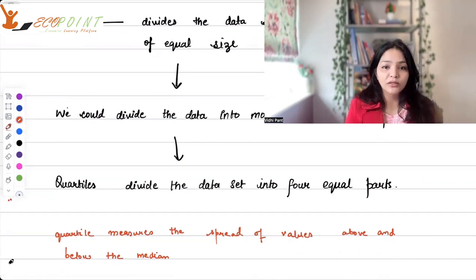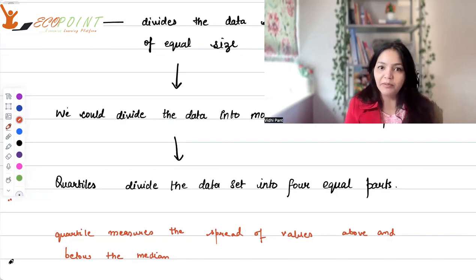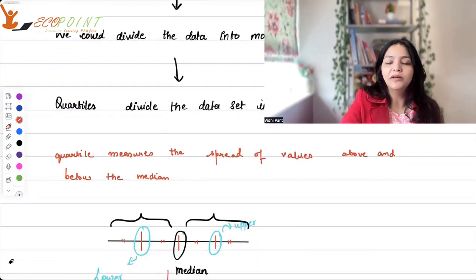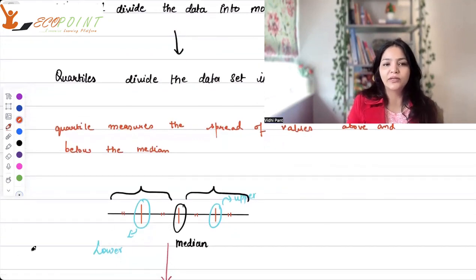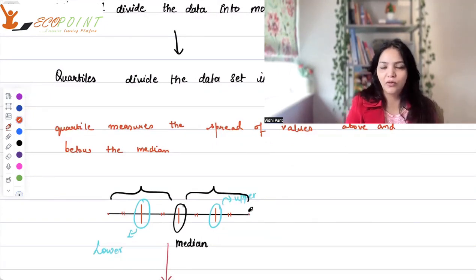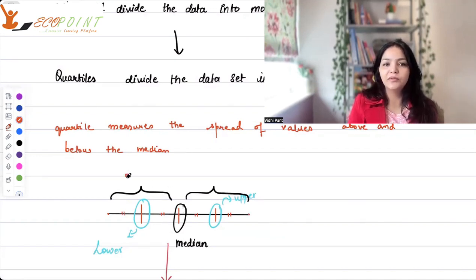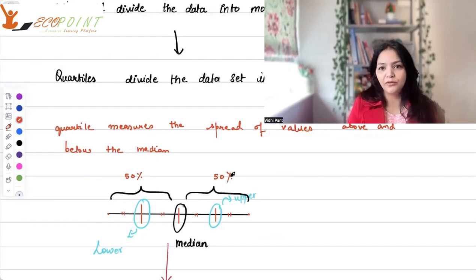So that is where quartiles come into picture. Quartile measures the spread of values above and below the median. So again, suppose your data starts from this point and is until this point. And we have this data in ascending order. Now, your median, that is the middle point, this is your median, because it has 50% values here, 50% values here divided. But it's not telling you anything about the values here. If I divide my data into four equal parts, you can see one here, one bar here, one bar here, and that gives me four equal parts.